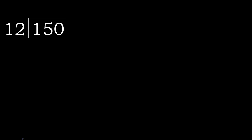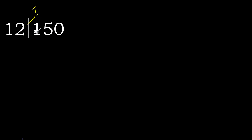150 divided by 12. 1 is less, therefore next, 15 is not less. With 15, 12 multiplied by which number is nearest to 15 but not greater? 12 multiplied by 2 is 24, which is greater. Multiply by 1 is 12.